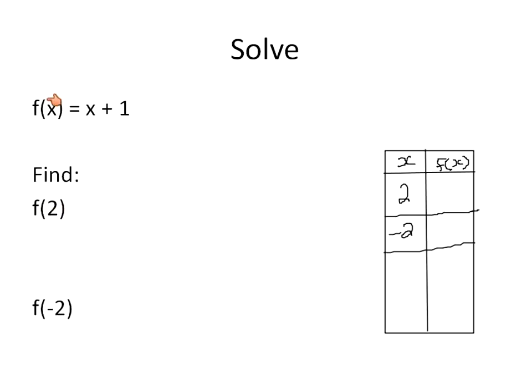That's exactly what we've been told to do here. It's just that instead of writing it in a table, we're given it in function notation. So f at the point 2, in other words, when x is equal to 2, what's my function at that point? So I'm going to substitute the value of 2 in everywhere I see the letter x. 2 plus 1. So the function at the point 2 is equal to 3. The function at the point negative 2 is negative 2 plus 1.